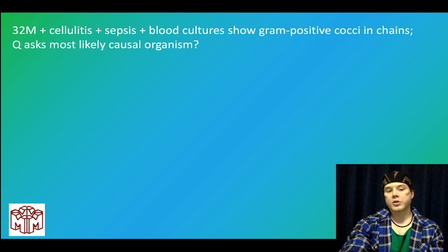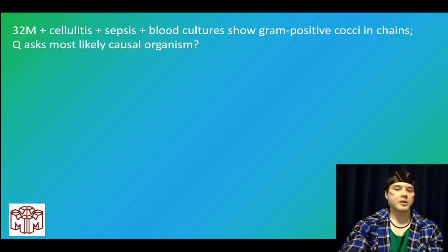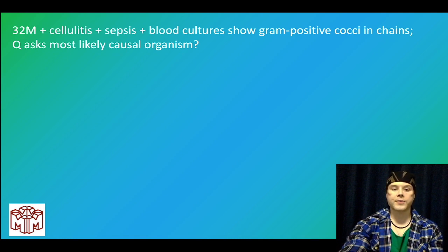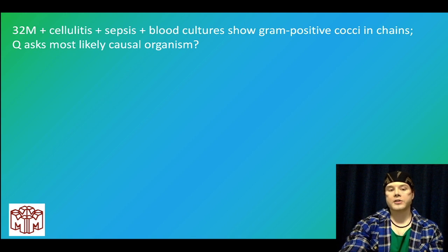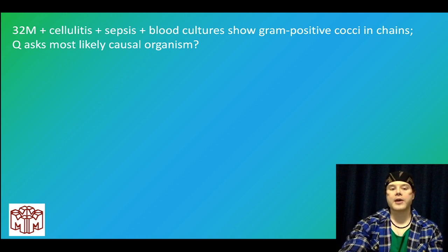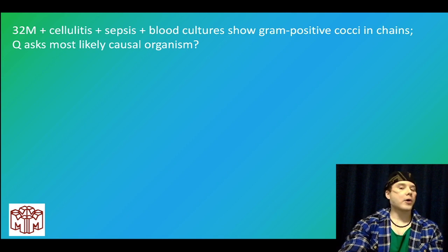A 32-year-old male with cellulitis and sepsis — blood cultures grow gram-positive cocci in chains, most likely organism? This is strep pyogenes causing toxic shock-like syndrome via exotoxins A, B, and C.